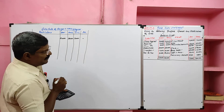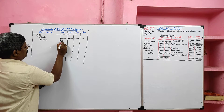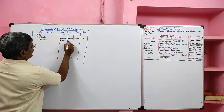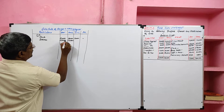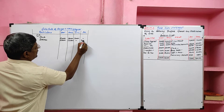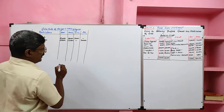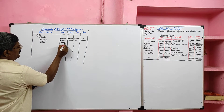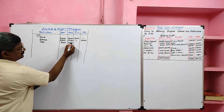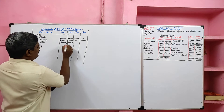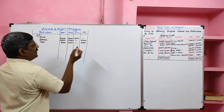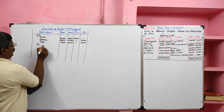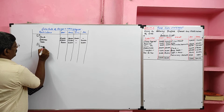Debtors' opening balance is 2,50,000 and closing balance is 2,30,000. Since the current asset value decreases, it results in a decrease in working capital. Then cash: opening balance 80,000, closing balance 60,000. The decrease of 20,000 is recorded on the decrease side.